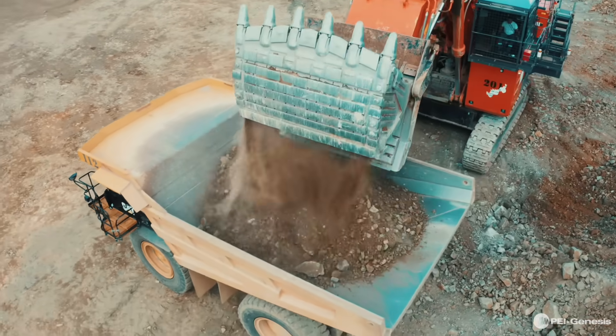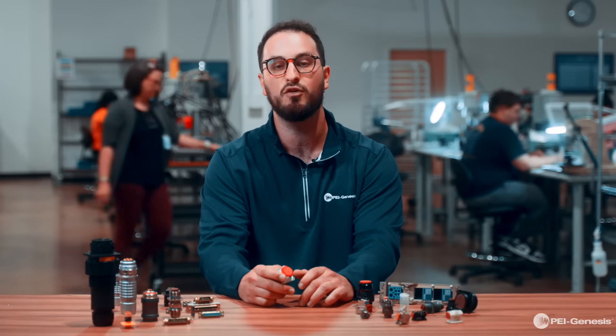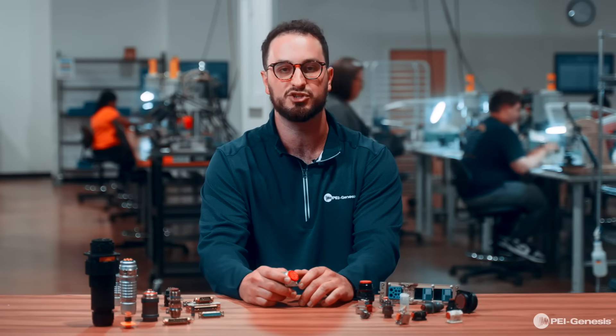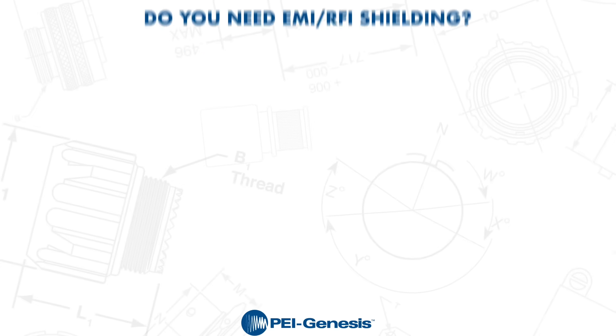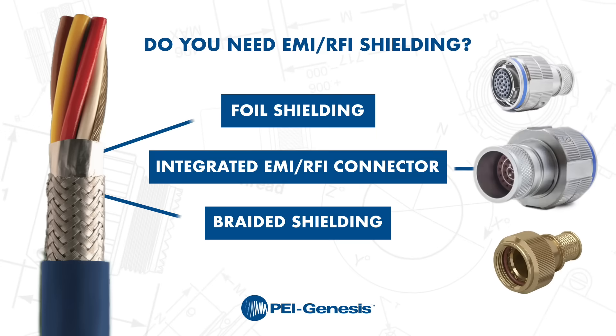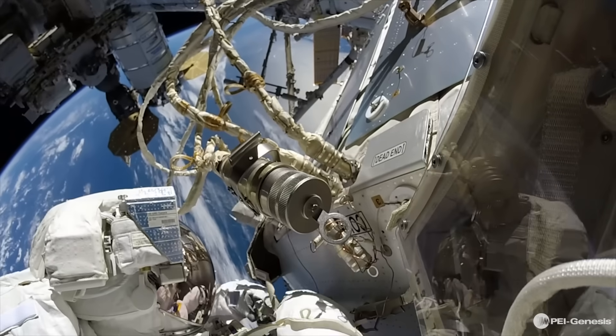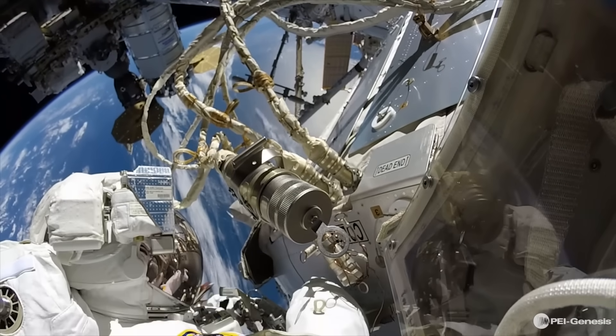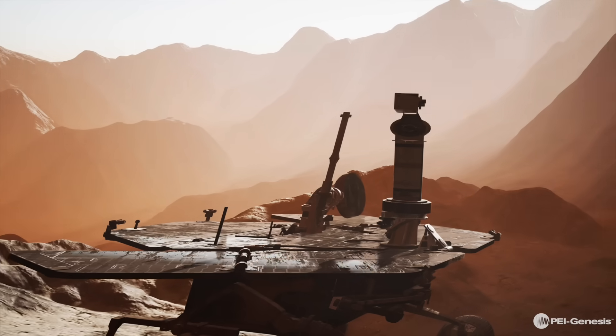Finally, we need to determine if EMI/RFI shielding is required. If your wires need shielding, then the connector you select needs to carry the protection over the connection to ensure no leakage or interference. This protects your connection from interfering signals and typically differentiates economical connectors from mid-range cost variants. If your application is in a noisy electrical environment or a radiation-heavy outer space environment, then shielding is essential to maintain signal integrity.